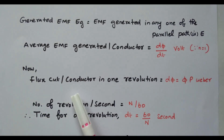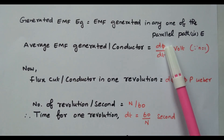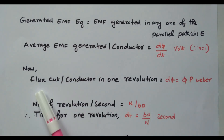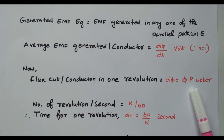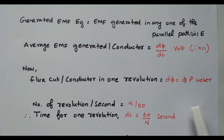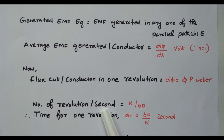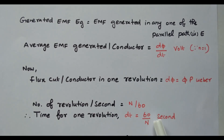Flux cut per conductor in one revolution: the rate of change of flux dφ equals φ × P — the flux per pole multiplied by the number of poles gives the flux cut per conductor in one revolution, in Webers. The number of revolutions per second equals N divided by 60, so the time taken for one revolution is dt equal to 60 divided by N seconds.